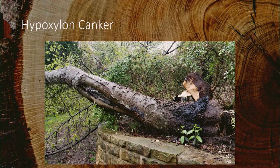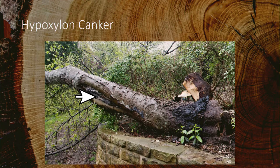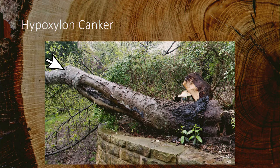Here's an example of hypoxylon canker that rotted the base of a hackberry tree in Fairview. You can notice the black growth at the bottom of the tree and a large wound from a branch that broke off and ripped down the side. That creates a huge wound that may never heal — you can see the callus tissue, which is the bulging tissue on the right and left side of the wound, where the tree tried to heal itself. But hackberries aren't good at sealing those wounds, and the decay spread faster than the wound healed, which likely led to hypoxylon canker rotting the base.